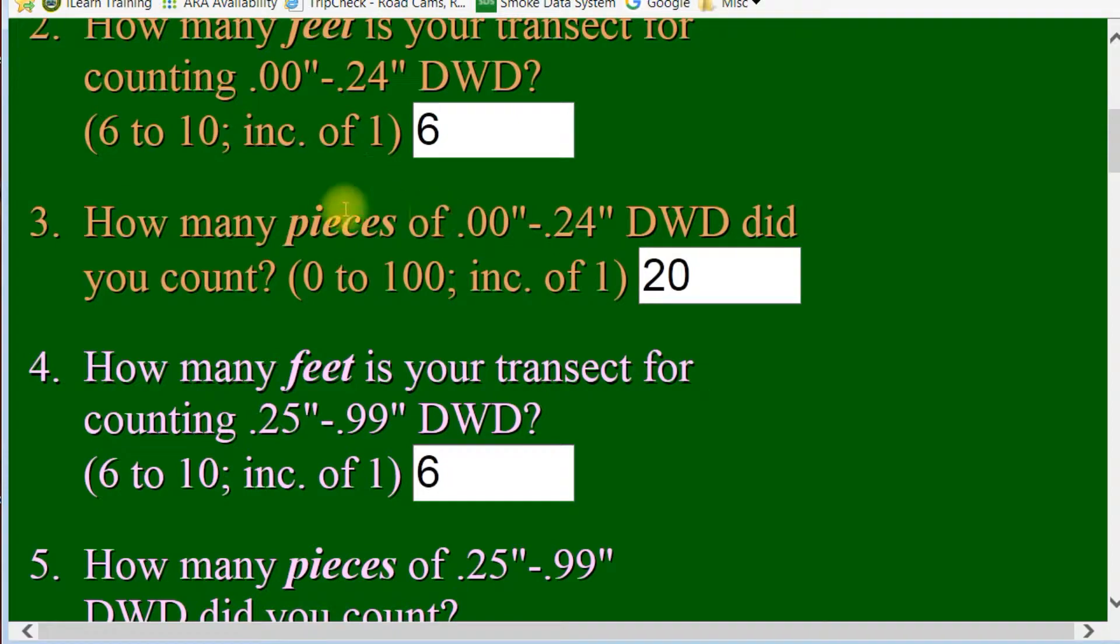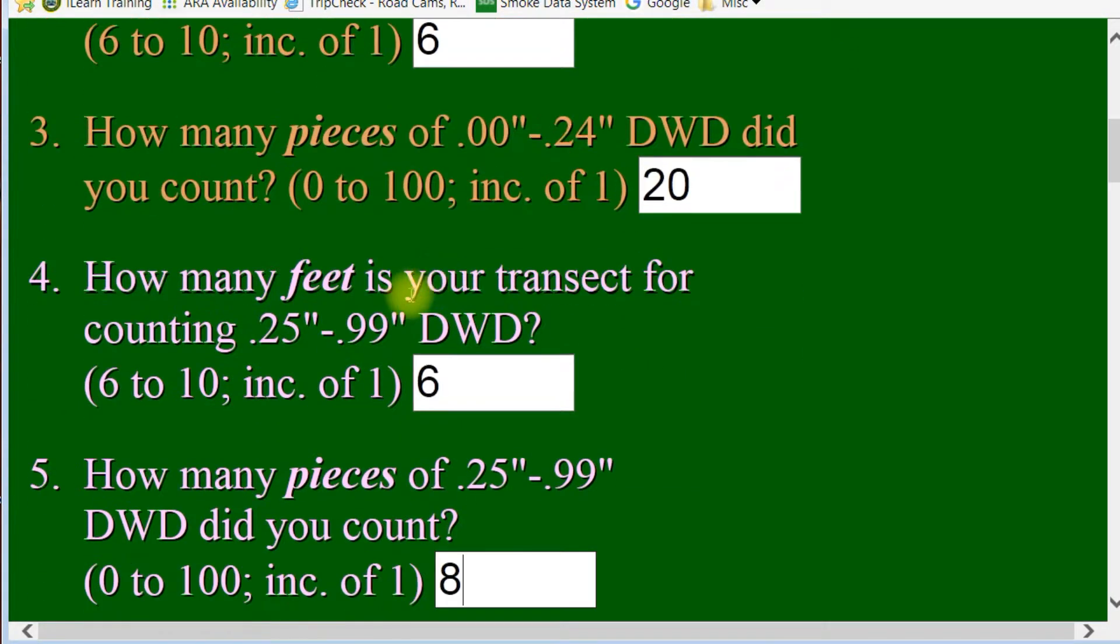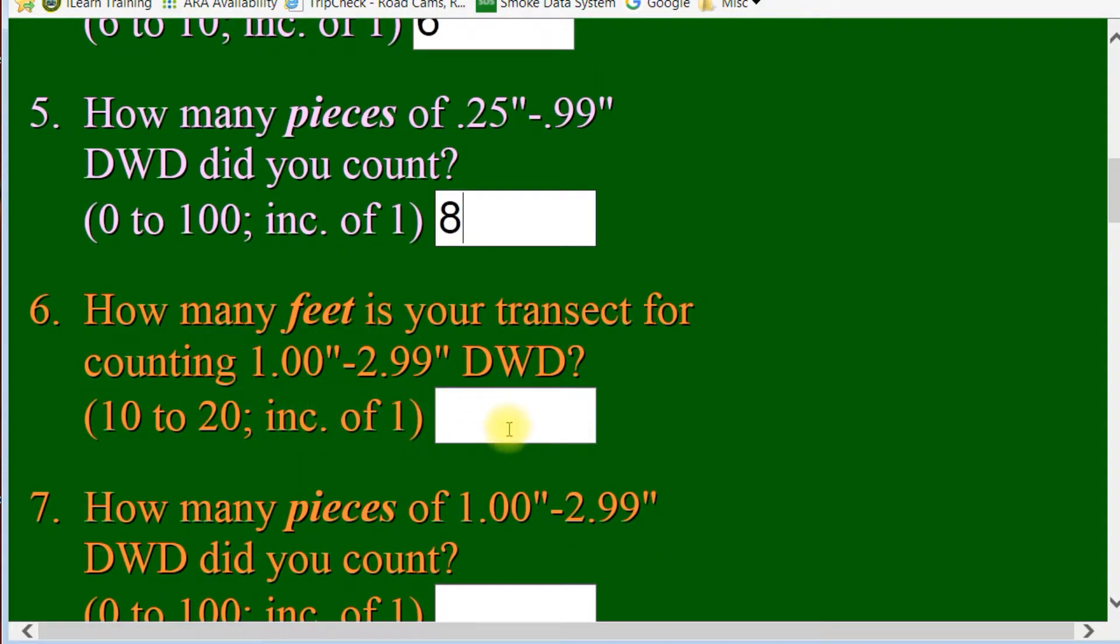Another thing that we tried to do for ease of sight is we color coded when you change categories. So, this is your zero to quarter, here's your quarter to one, and now we're going into one to threes, which has a different color. You'll notice that as well to help you keep track of where you're at on the form.